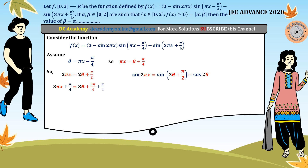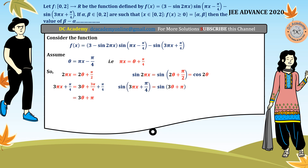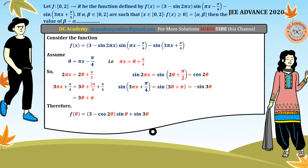Next, 3*pi*x + pi/4 equals 3*theta + 3*pi/4, and adding pi/4 gives pi + 3*theta. Hence, sin(3*pi*x + pi/4) equals sin(pi + 3*theta), which equals minus sin(3*theta). Substituting into the given function, it reduces to 3*cos(2*theta)*sin(theta) + sin(3*theta) as a function of theta.